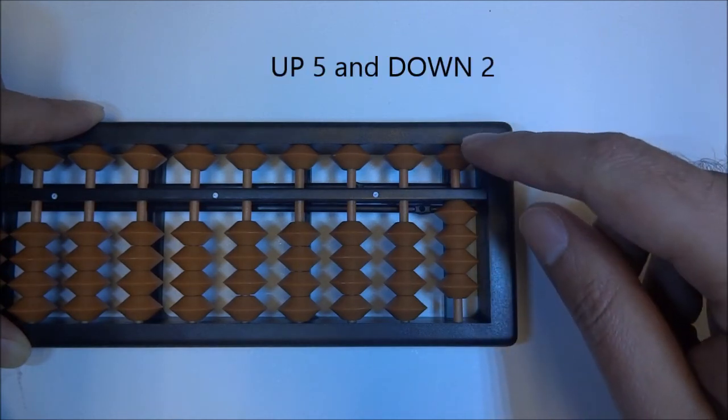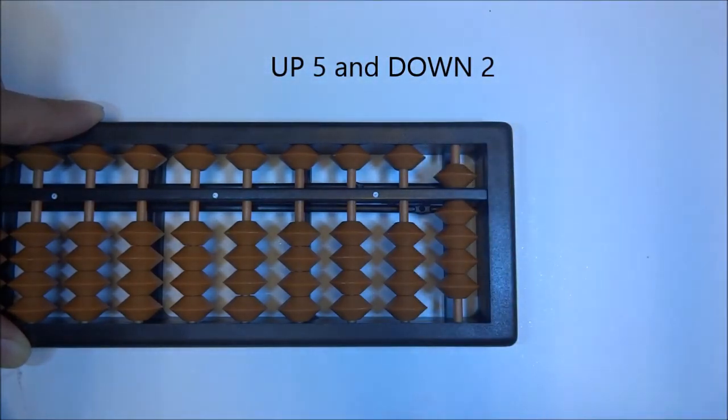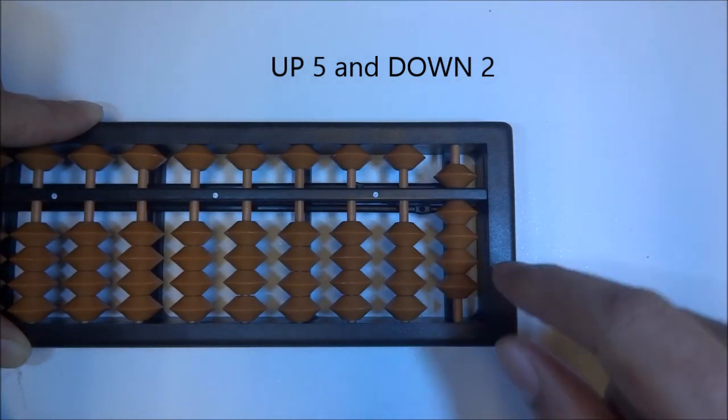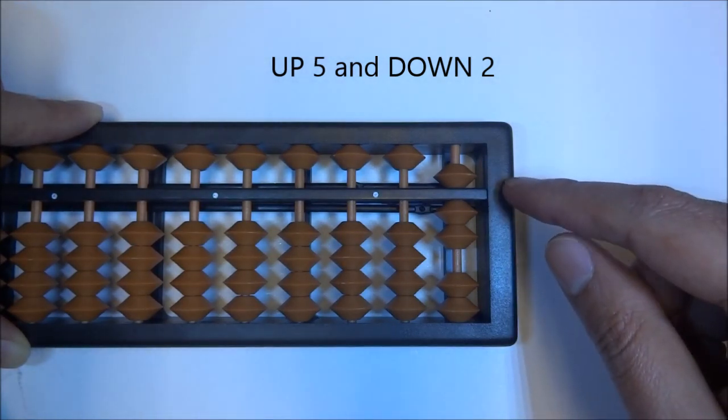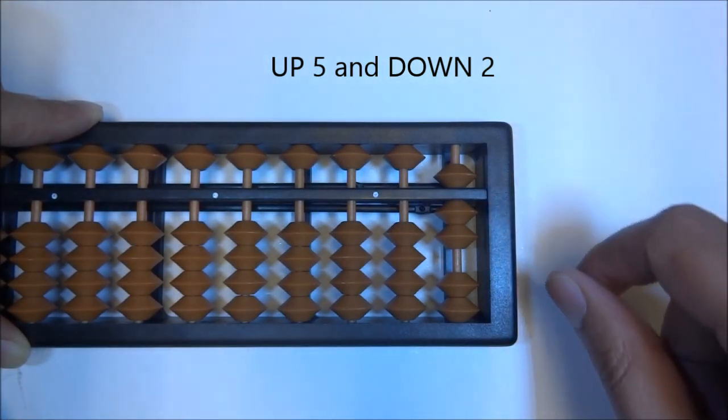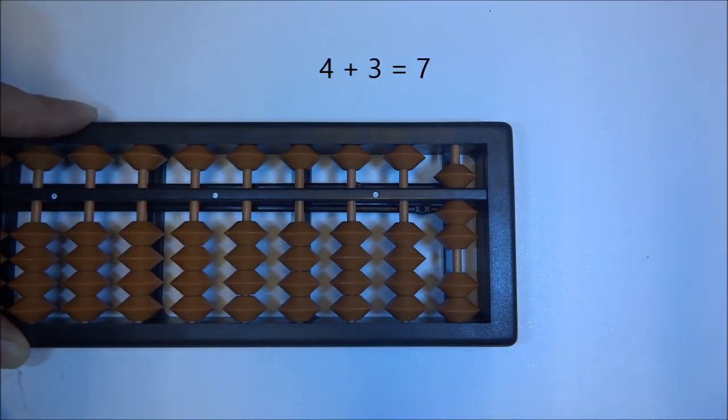Up 5. And down the little friend, which is 2. Down the little friend. What are we left with? What are we left with? 5 plus 1 plus 1. 7. 4 plus 3 is 7.